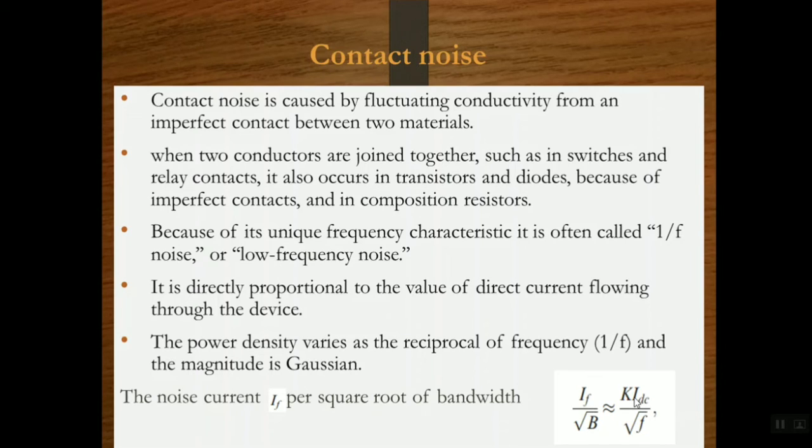K is a constant that depends upon the type of material and its geometry. B is the bandwidth in hertz centered about the frequency f.